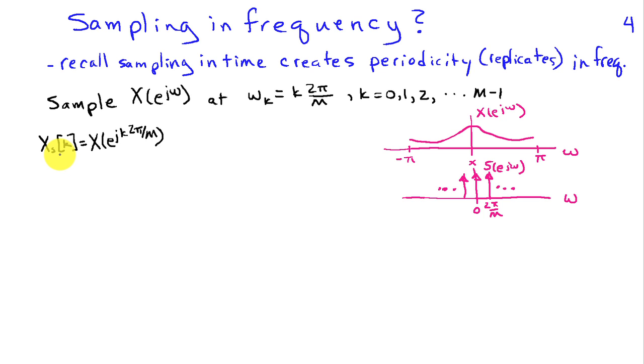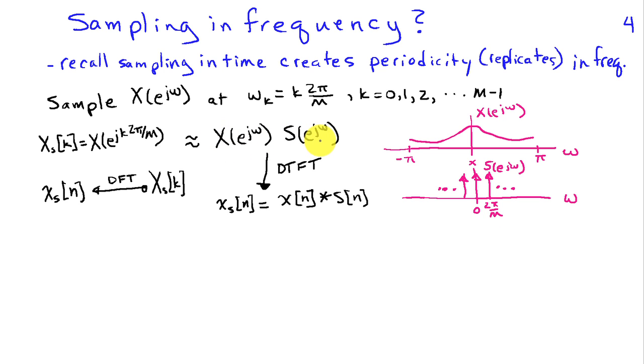It's sampled in frequency, just like we used x_s of t when we sampled in time. So I can represent this sampling process as taking the original DTFT, x of e to j omega, multiplying it by a train of impulses that are spaced by the sampling interval 2 pi over M. And that is a representation for my sampled signal. So if I think about this as multiplication in the frequency domain, where I'm taking x of e to j omega, multiplying by s e to j omega, where s is this impulse train, that corresponds to convolution in time.